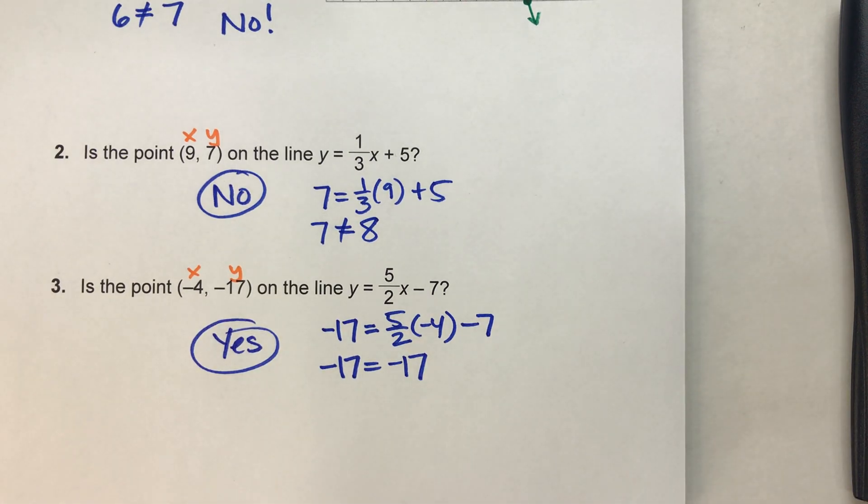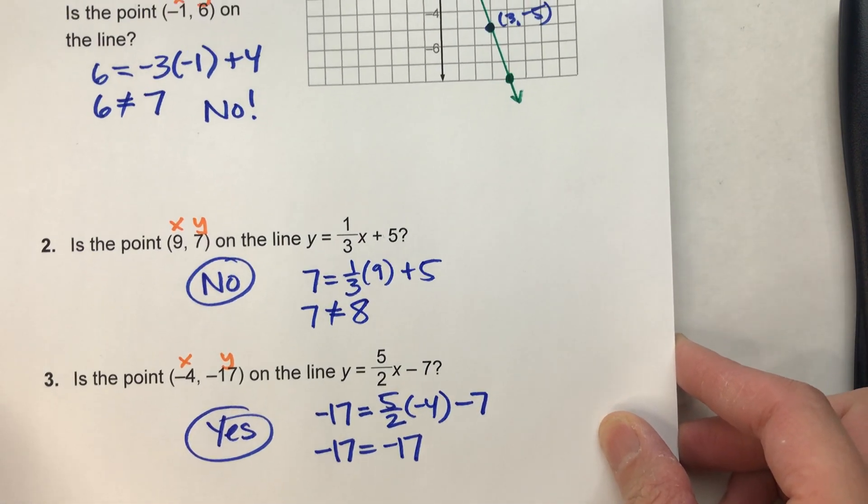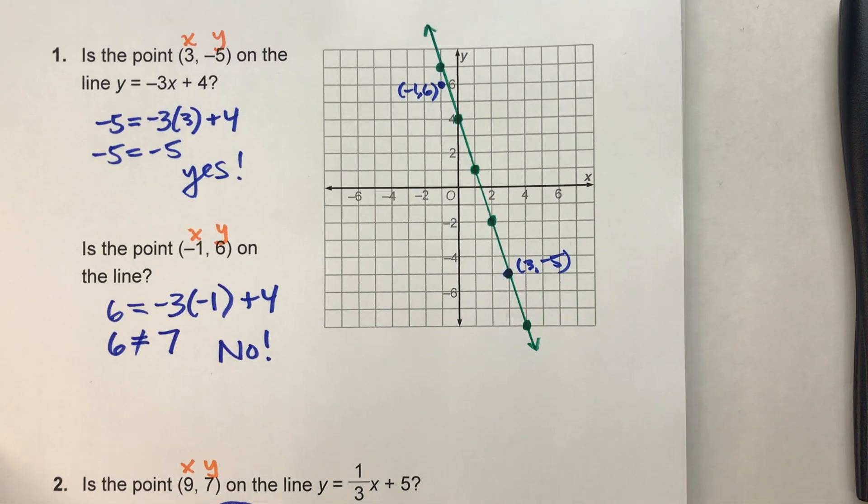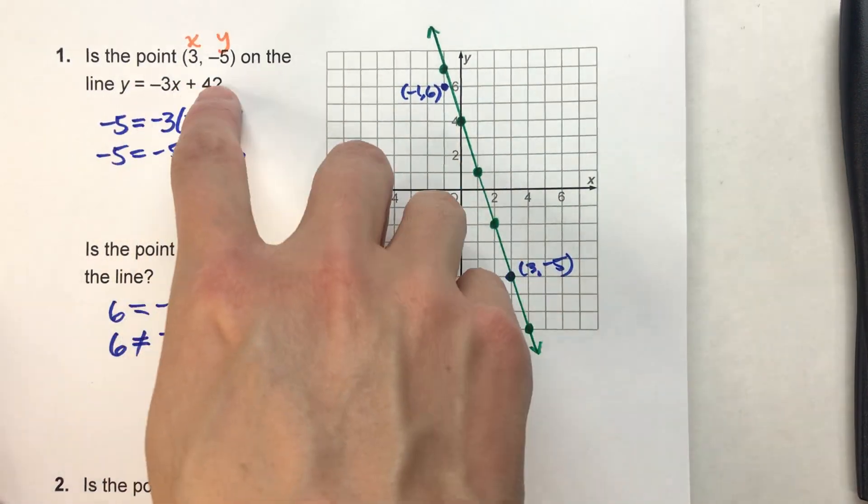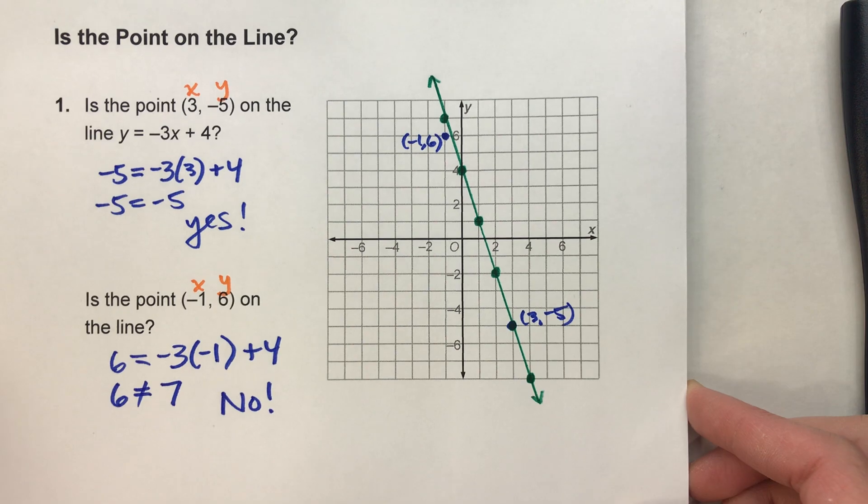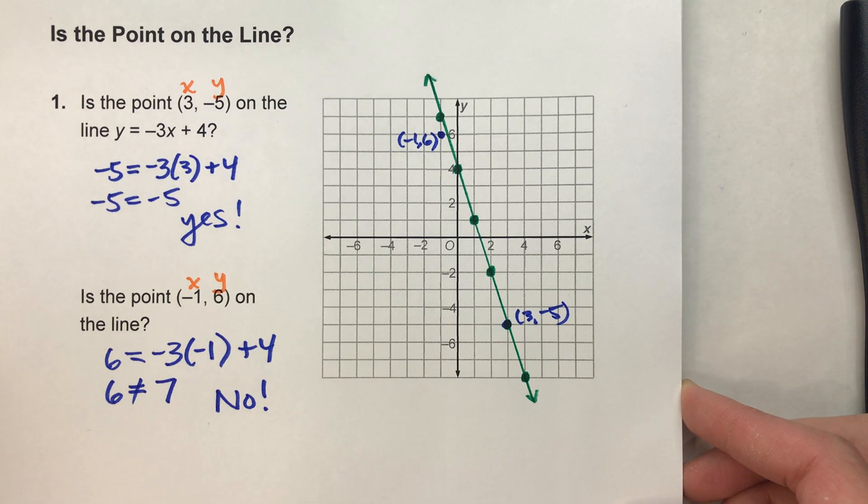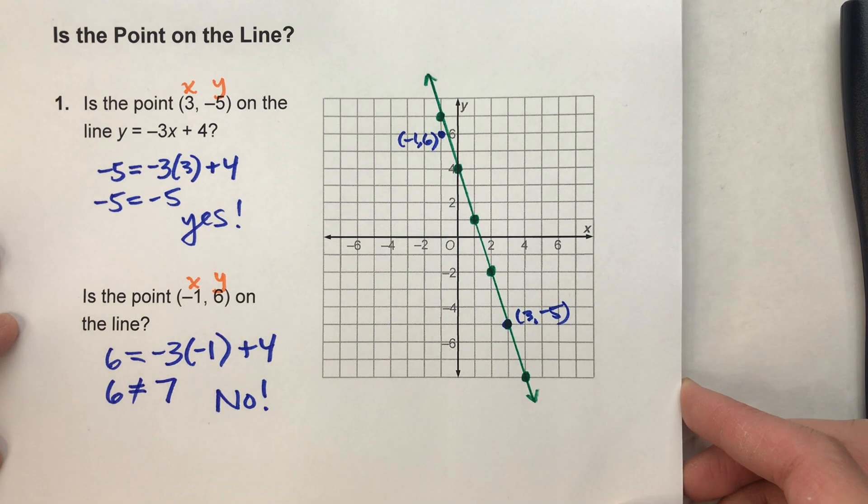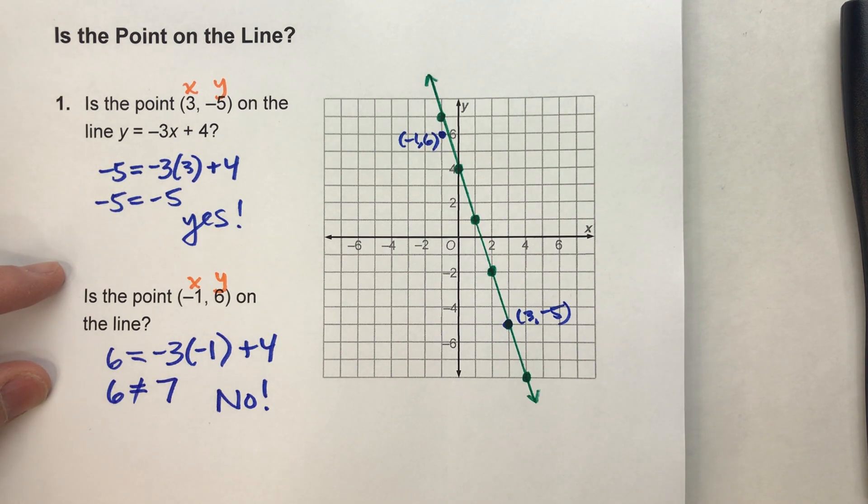So, it's pretty easy to determine if a point really is on a line. Take the x and y coordinates, put them into your equation, and see if it works. If it works, then it's on the line. If it doesn't work, it's not on the line. So, hopefully you found this video helpful. If you did, please hit that like button. Also, subscribe because it really helps us out. But with that being said, good luck in math and I will see you next time.